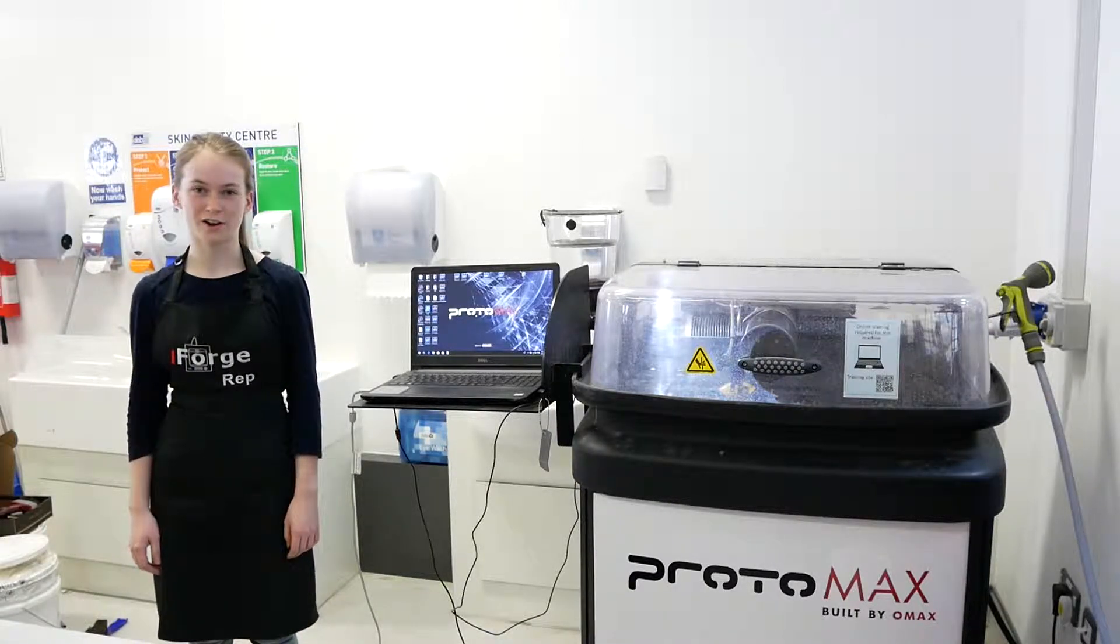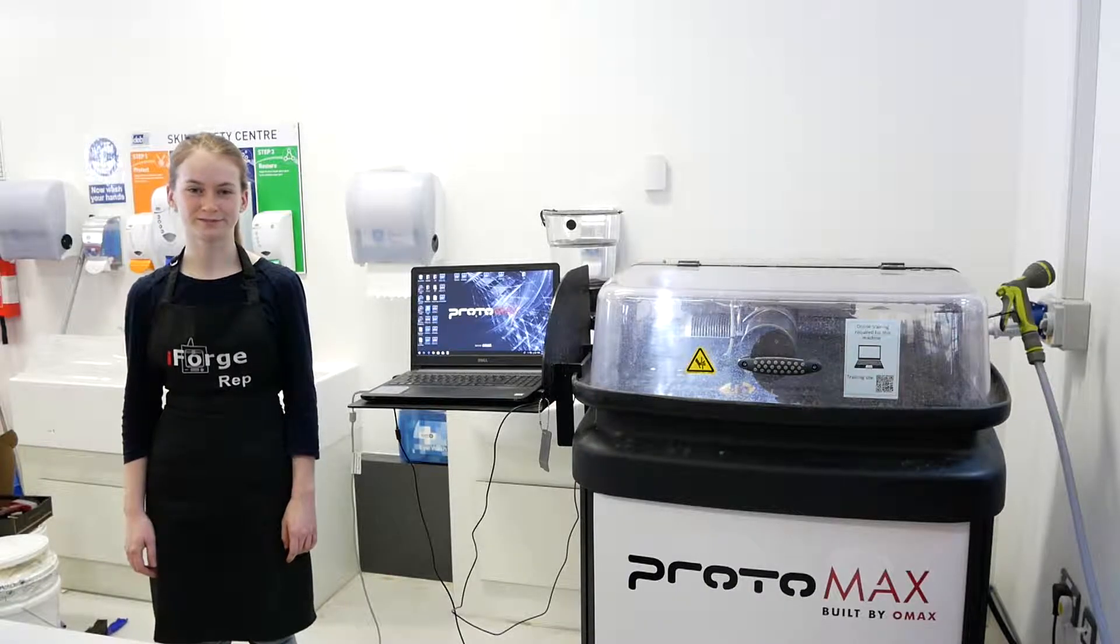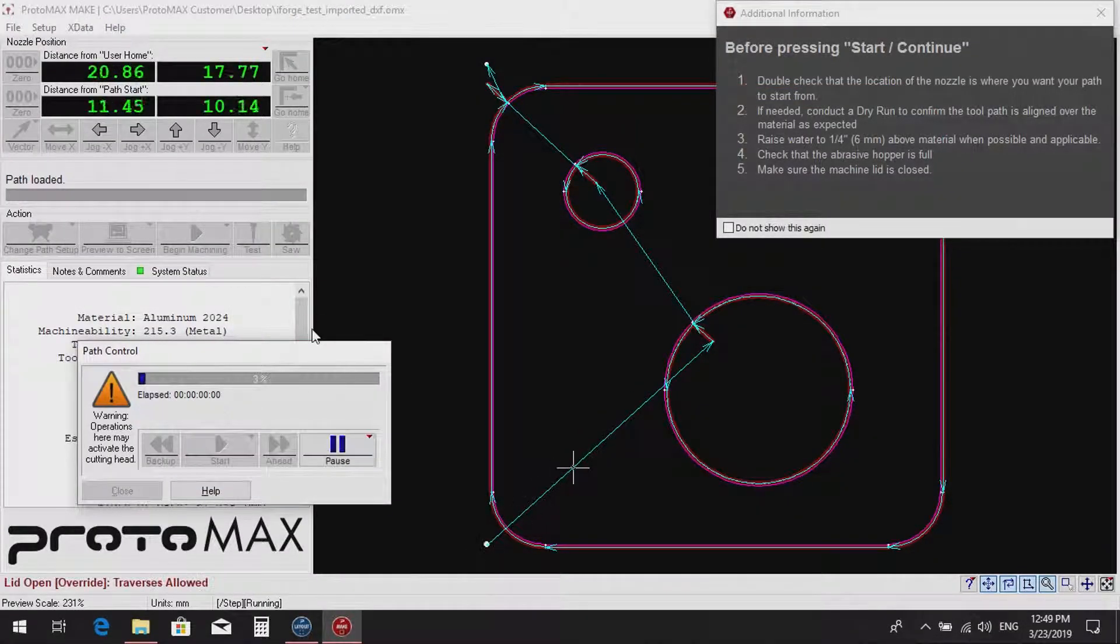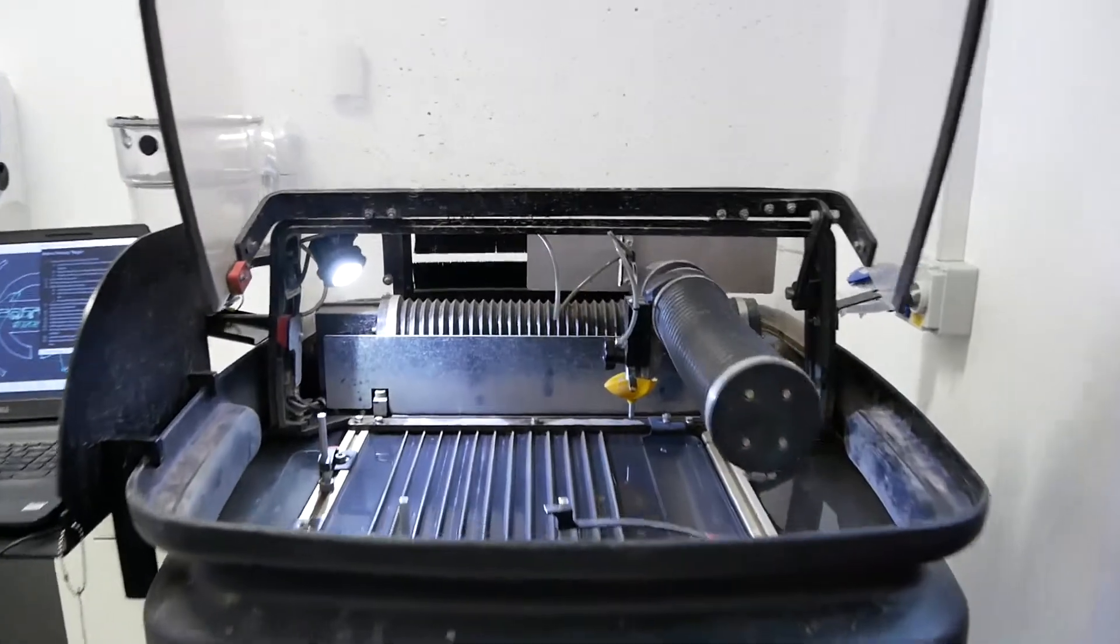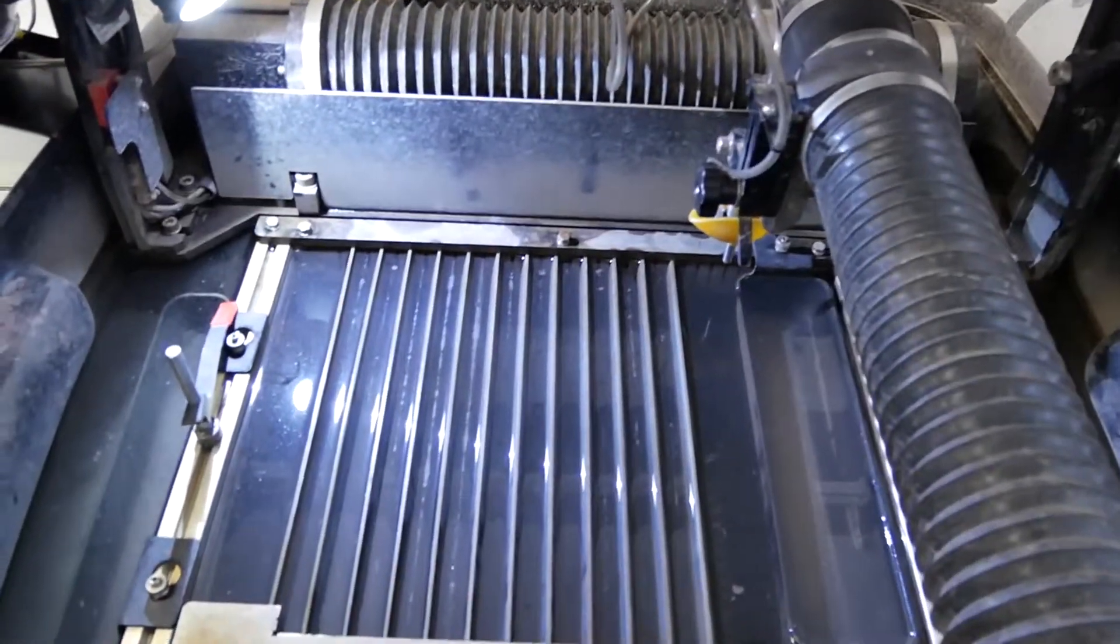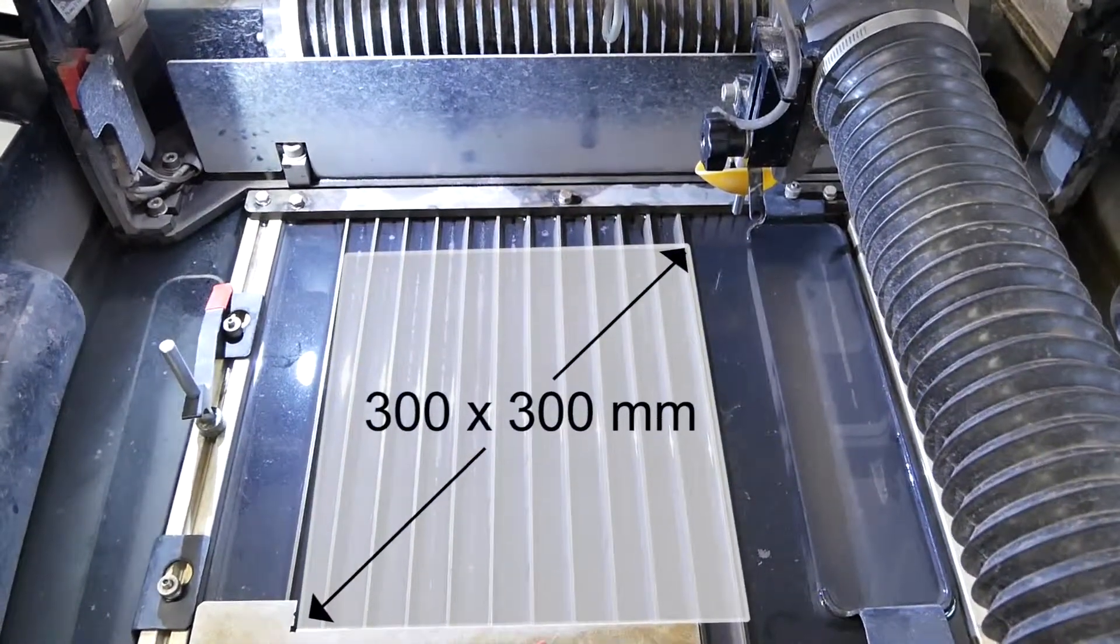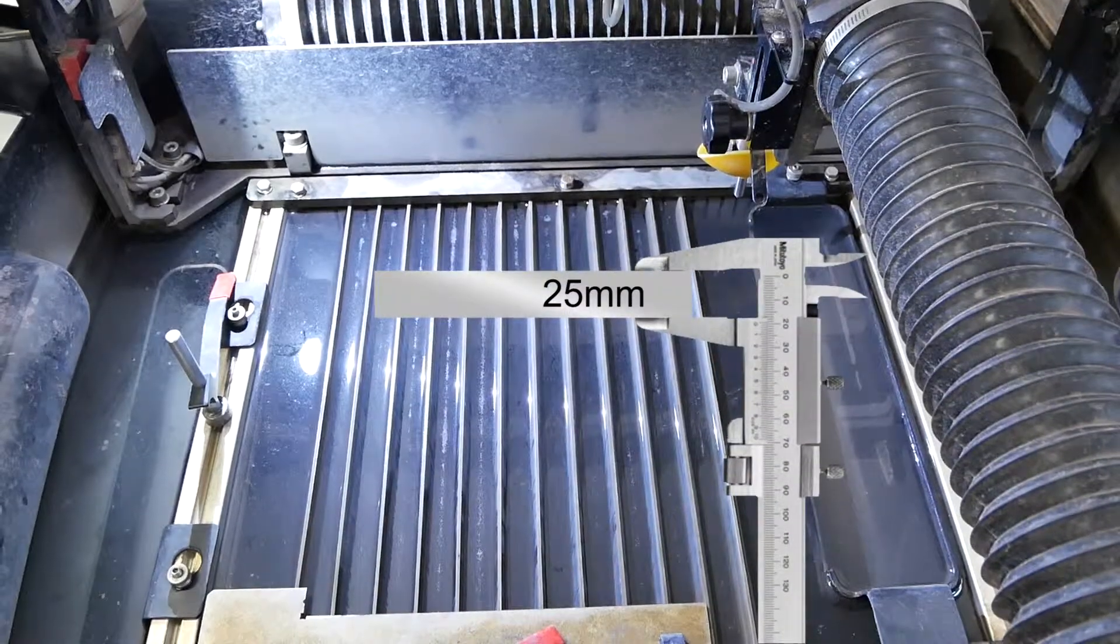However, it will also cut foams, woods and many more. The nozzle follows a vector path created from a DXF and can cut very accurately with intricate detail. Here in the iForge, we have a Protomax Waterjet Cutter with a bed size of 300x300mm and a maximum thickness of 25mm.